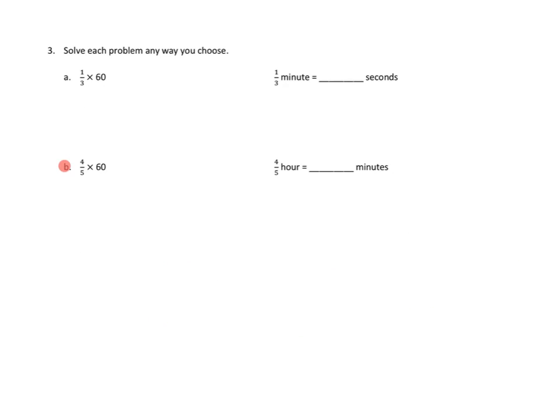Let's take a look at one more problem from tonight's homework. Directions in number 3 are to solve each problem any way you choose. And the question is 4 fifths times 60. So let's see. 4 fifths times 60. I'm going to kind of set this up the same way that we did before. 4 times 60, all over 5.